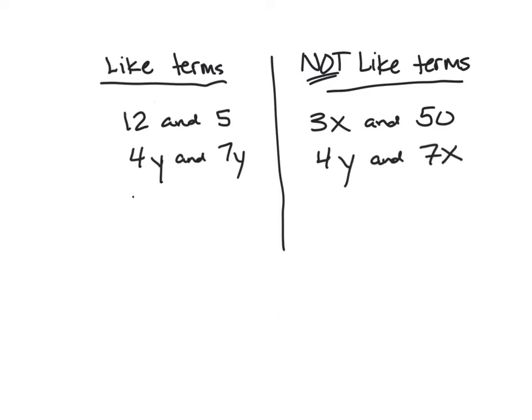Another example of like terms: 2y² and 5y² — both the same letter variable raised to the second power. If I have 5y² and 2y², I can put them together to be 7y². What I cannot put together is 2y² and 5y — those aren't the same value. y to the second power, say it's 2: 2² is 4, but 2 by itself is just 2. So I can't just put those together.